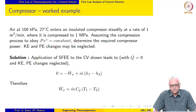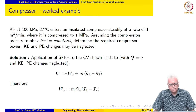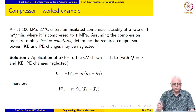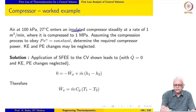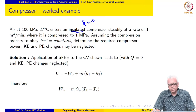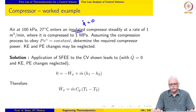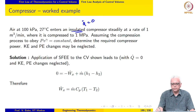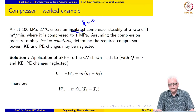Let us look at a couple of worked examples involving a compressor. Air at 100 kPa and 27 degrees Celsius enters an insulated compressor steadily at a rate of 1 cubic meter per minute, where it is compressed to a pressure of 1 MPa. Assuming the compression process obeys PV raised to gamma equals constant, determine the required compressor power. KE and PE changes may be neglected.